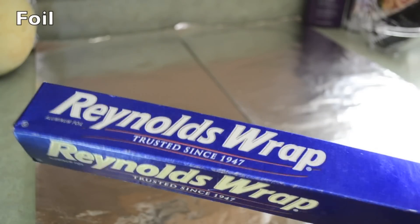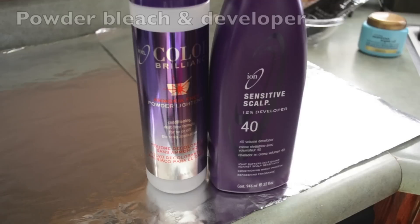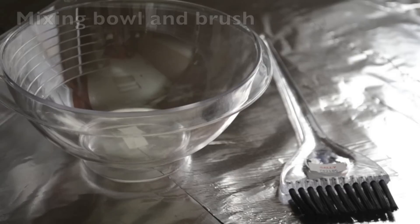You're going to need some foil to protect your surfaces, some powdered bleach and developer. I'm using 40 volume developer because I'm working with very dark hair.